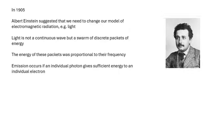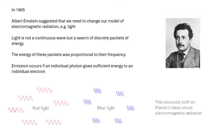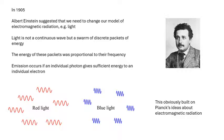Emission occurs if an individual photon gives sufficient energy to an individual electron — the energy of the photons is quantized. For example, blue light has a higher frequency and smaller wavelength than red light, so blue light photons have more energy than red light photons. Ultraviolet photons have even more energy per packet, building on Planck's ideas about electromagnetic radiation.